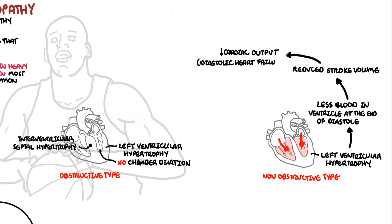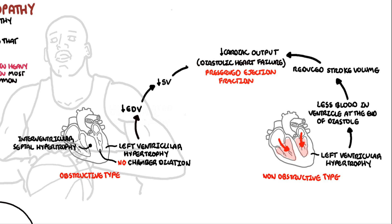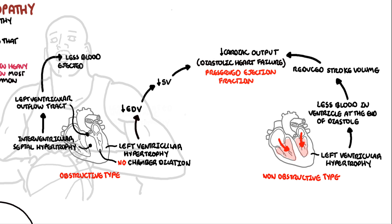An important concept is that the ejection fraction is still preserved in early stages, because even though the end-diastolic volume is low, all the blood present is still pumped out. In the obstructive type, left ventricular hypertrophy also reduces end-diastolic volume and stroke volume. Additionally, the interventricular septal thickening causes left ventricular outflow obstruction — similar to aortic stenosis — so during systole, less blood is pushed through the aorta, resulting in reduced cardiac output with a typically low ejection fraction.